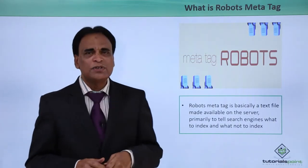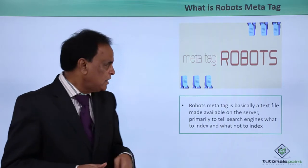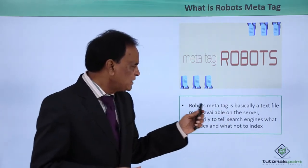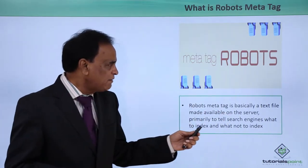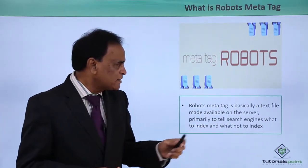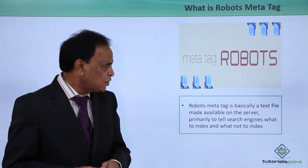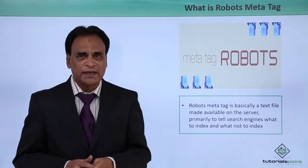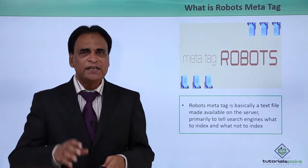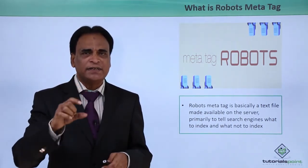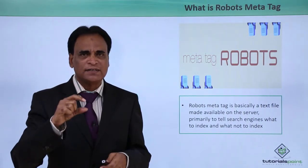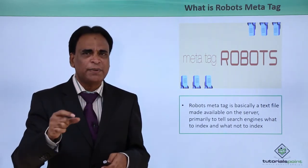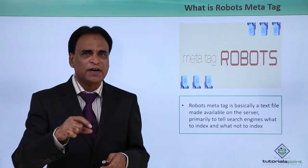What basically is Robots Meta Tag? Robots Meta Tag is a text file made available on the server, primarily to tell search engines what to index and what not to index. It is a text file of a few lines — about 3 to 4 lines — depending upon the requirements.